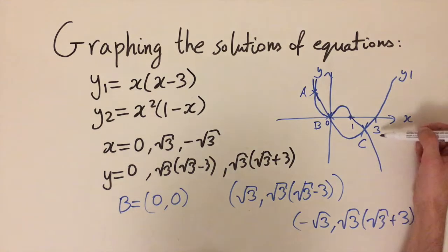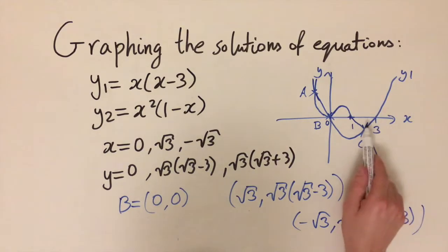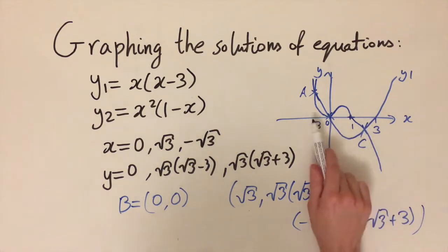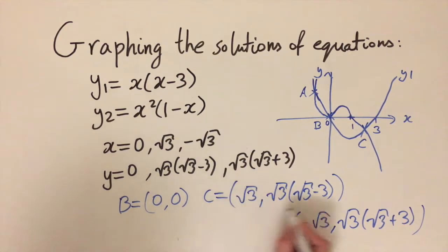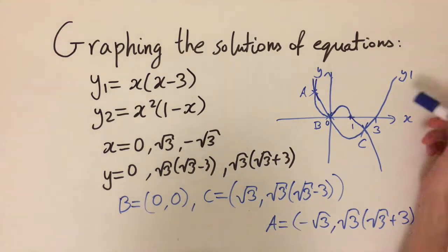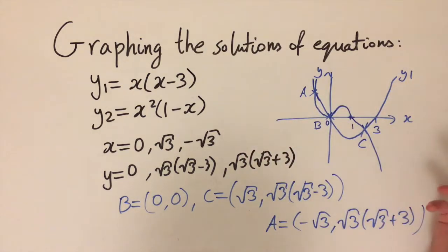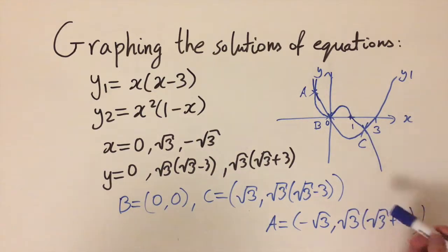We identify A and C simply by looking at the x values. C has a positive x value and A has a negative x value, so C corresponds to positive root 3 and A to minus root 3. This shows the advantage of sketching beforehand — it gives intuition and lets you double-check your answers.